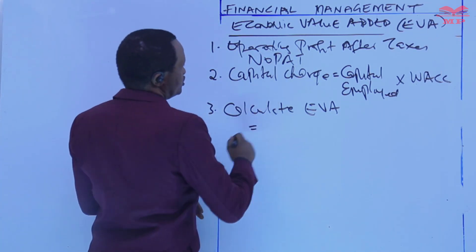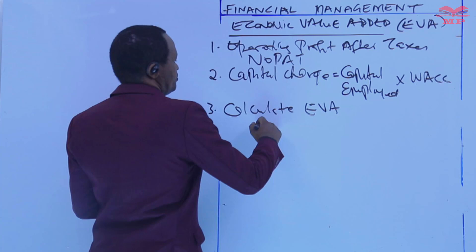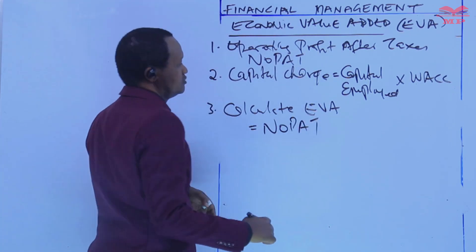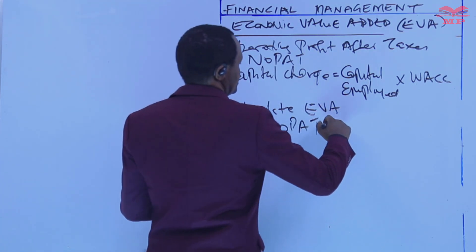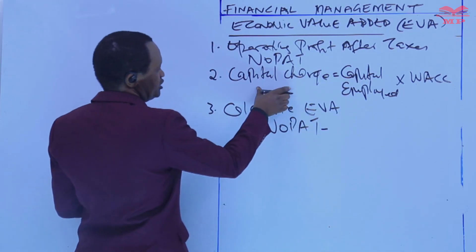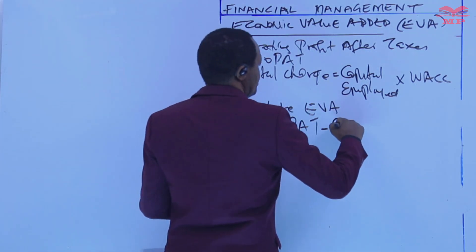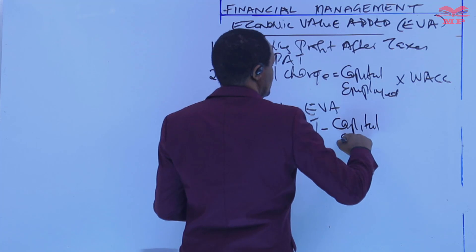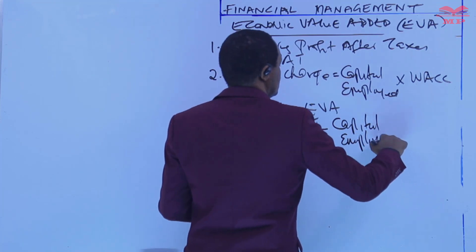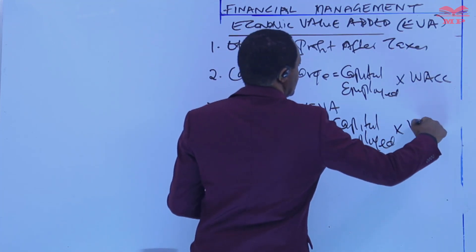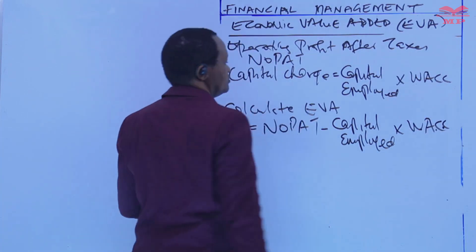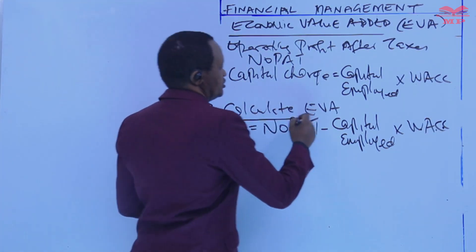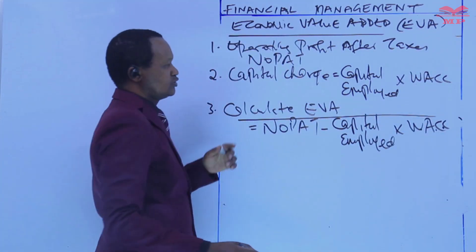EVA is equal to net operating profit after tax (NOPAT) minus the capital charge, which is capital employed times the weighted average cost of capital. That is how to calculate EVA.